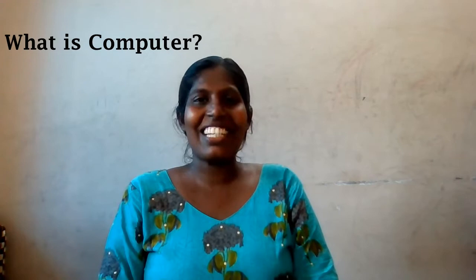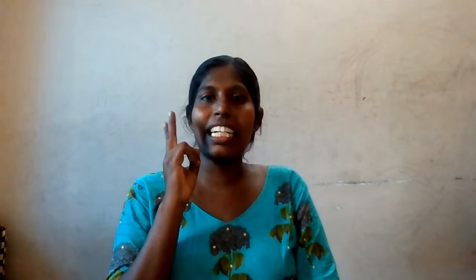What is a computer? It is an electronic device which helps us in many ways. It is used everywhere — in schools, colleges, railway stations, even in small shops for business purposes. This computer is categorized into two parts: hardware and software. Hardware and software together make a computer.